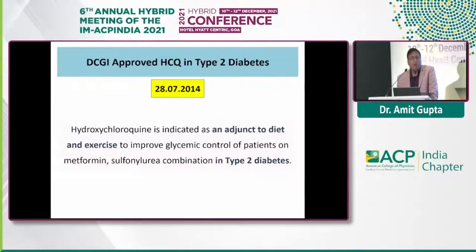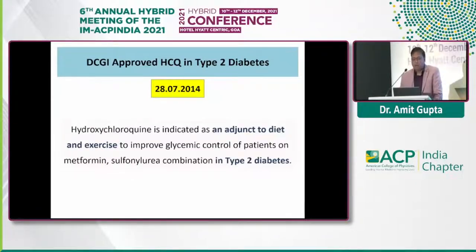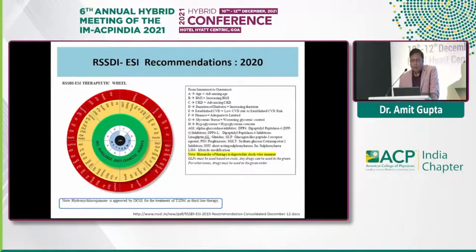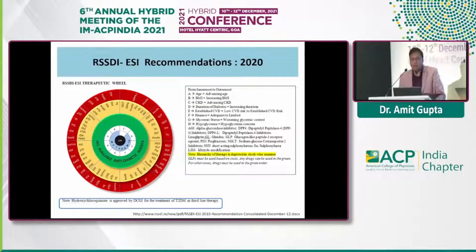DCGI approved HCQ in the management of type 2 diabetes in 2014. It is indicated as an adjunct to diet and exercise to improve glycemic control in patients on metformin and sulfonylurea combination. The RSSDI DSI 2020 recommendation notes that hydroxychloroquine is approved by DCGI as second or third-line therapy for type 2 diabetes and can be added when useful.